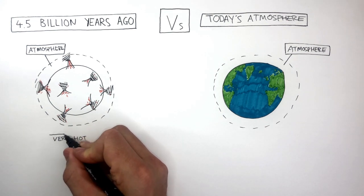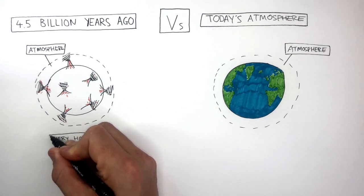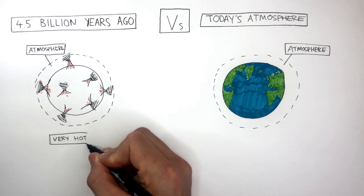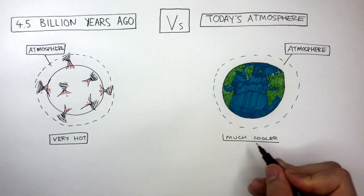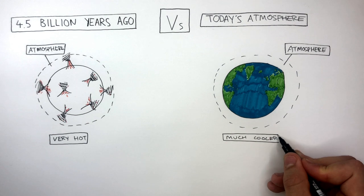It was very hot 4.5 billion years ago due to the large amounts of volcanic activity, whereas it is much cooler in today's atmosphere as there is a lot less volcanic activity.